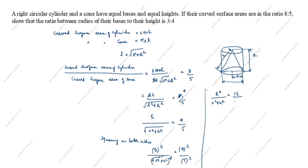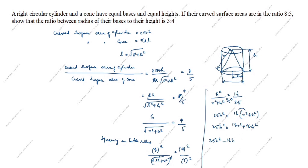h squared divided by r squared plus h squared equals 16 by 25. Now cross multiply: 25h squared equals 16 open the bracket r squared plus h squared. 25h squared equals 16r squared plus 16h squared. You see here — h squared on both sides — bringing to one side: 25h squared minus 16h squared equals 16r squared. 25 minus 16 is 9, so 9h squared equals 16r squared.